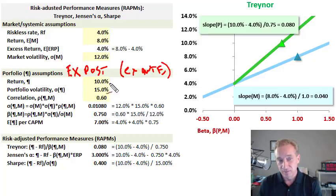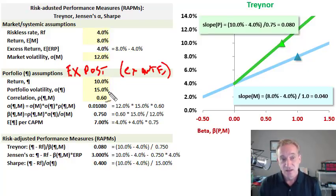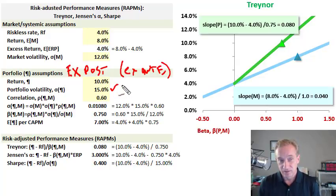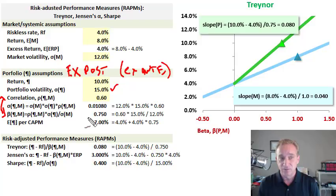I'll assume the portfolio had a 10% return. Right away, that's higher than the market's return of 8% by 2%. If the market is the benchmark, we could call that an active return. But I'll say that comes at the cost of higher volatility of 15%. And then there's a correlation assumption between the portfolio and the market—let's say we've observed it's 0.60.